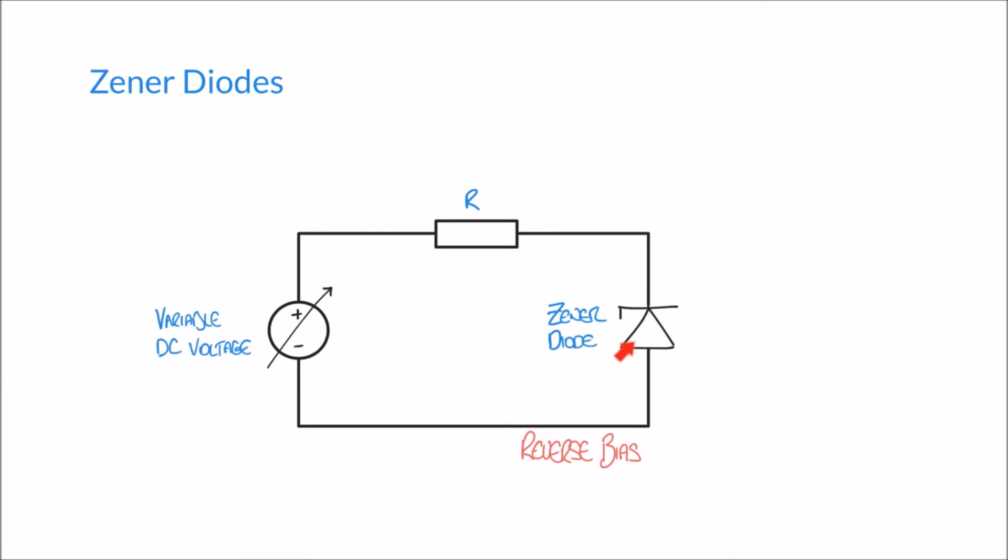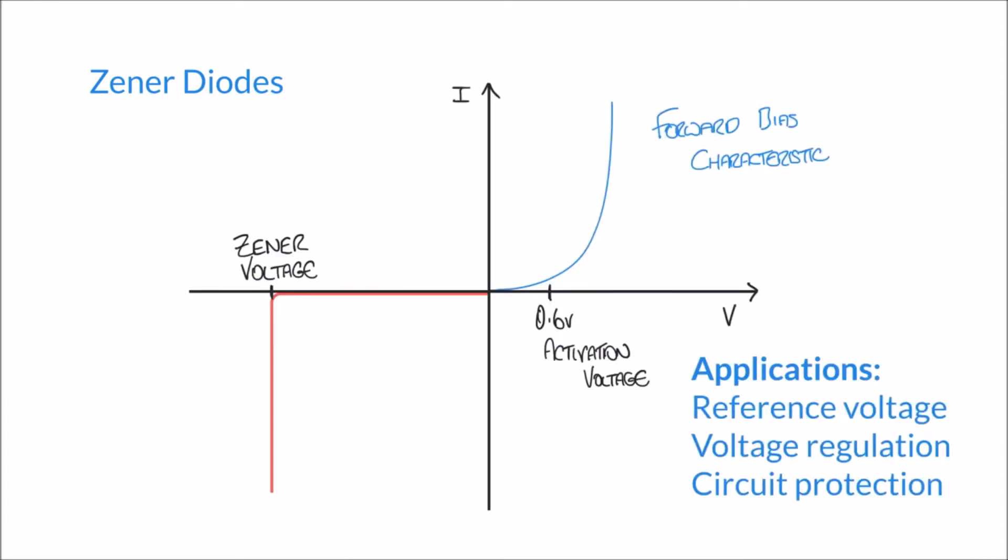For a Zener diode though things are slightly different and if we were to take a range of voltages and plot a VI characteristic in reverse bias we would see something that looks like this. Here I've taken the same diagram as I had before which shows our forward bias characteristic but I've added here the reverse bias characteristic and I've done that by plotting it in this negative quadrant of the graph.